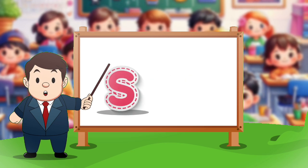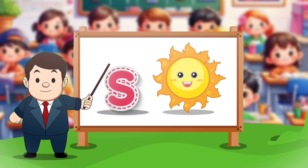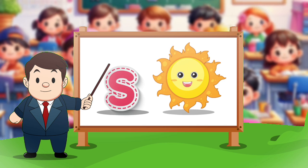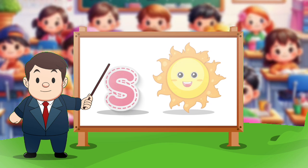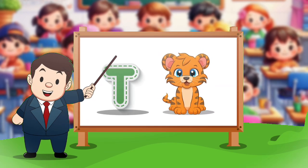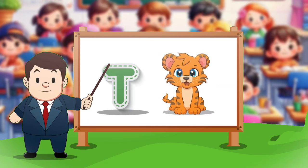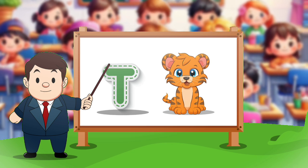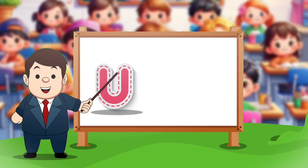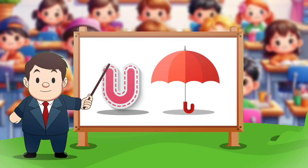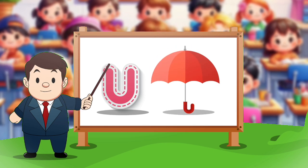S. S for sun. T. T for tiger. U. U for umbrella.